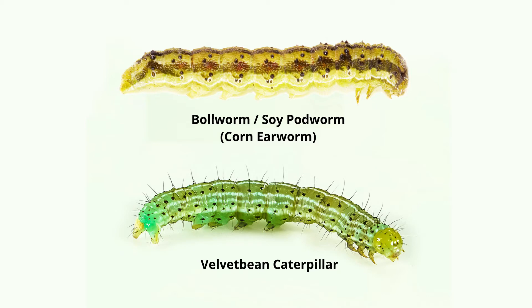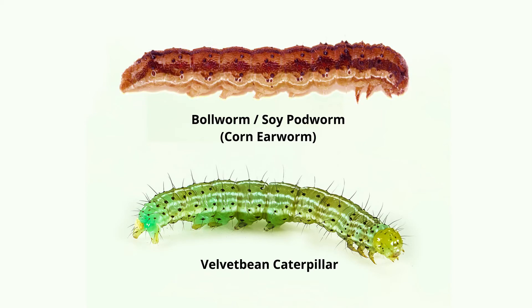Another distinguishing feature with a bollworm is that they will be multiple different colors — anything from tan to green to brown — and they will have a very dull stripe running down the length of their body versus white. So if it's a white stripe that goes down the body, it's a velvet bean caterpillar.